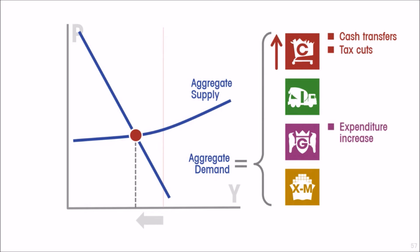Then the central banks also got into the act. At the same time as governments were giving cash transfers, cutting taxes, and increasing their own expenditure to push up the consumption and government spending components of aggregate demand, the central banks pursued massively expansionary monetary policy — pumping as much liquidity into the economies as they could to bring interest rates down, all for the purpose of shoring up investment spending. So with all of that taken together, the purpose was to attempt to mitigate what would otherwise have been a sharp and massive reduction in aggregate demand.